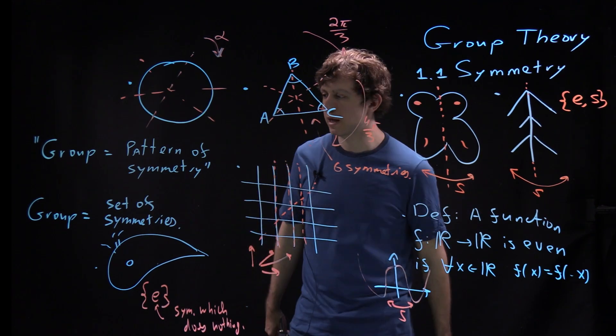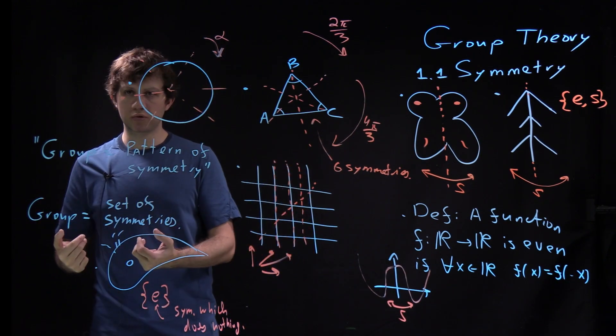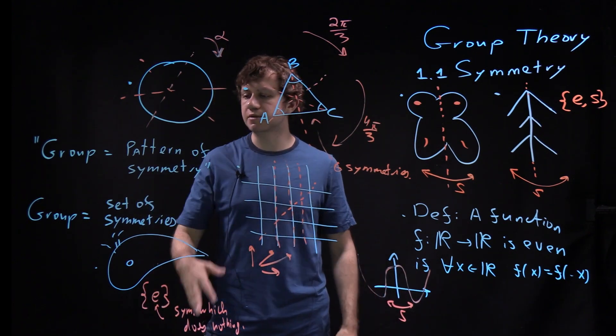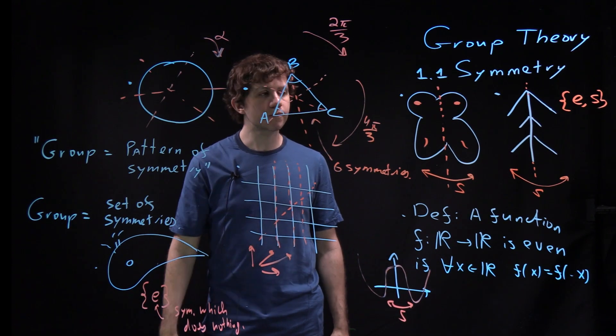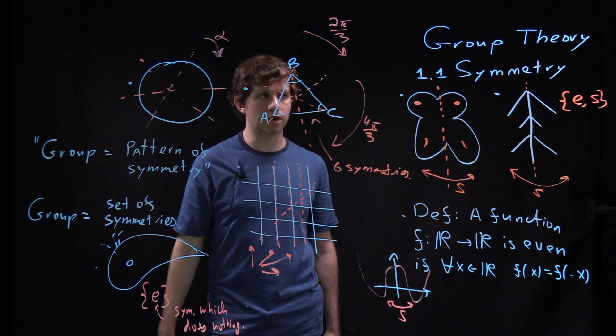And the answer is no. We'll see different examples. So there should be something about the set of symmetries which makes it into a group. And it's not a property, because there's not so many properties just a general set can have. But it's actually additional structure. And the structure is something we will discuss next.